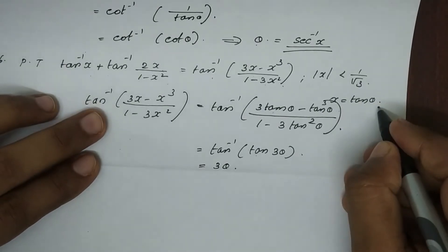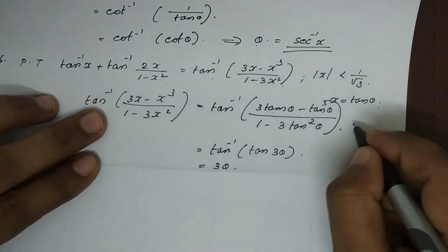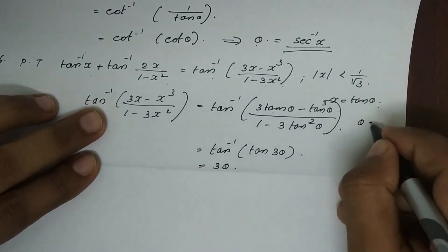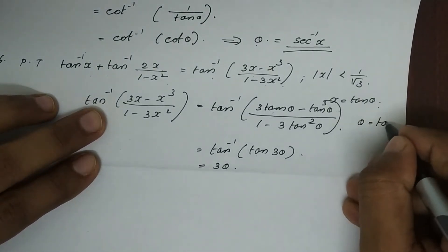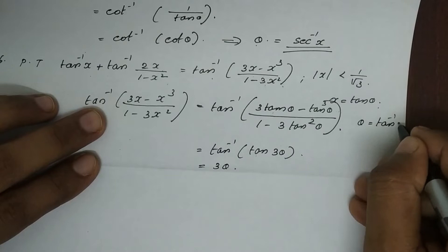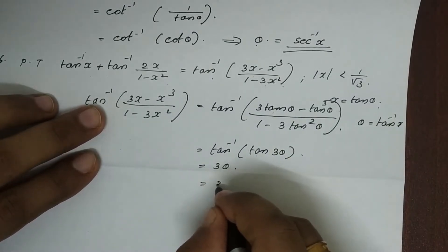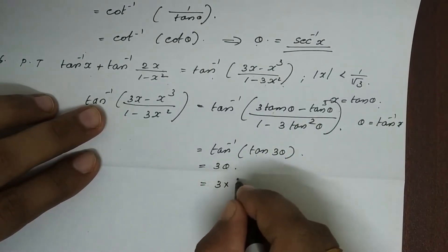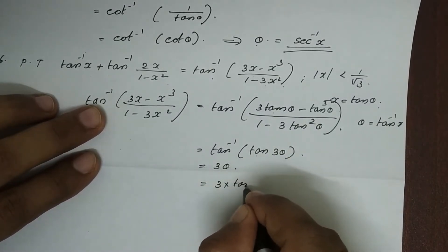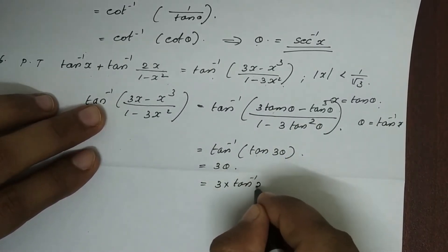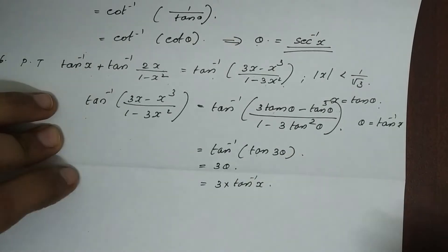Let x equal tan theta. So theta is equal to tan inverse x. Therefore the RHS becomes 3 into tan inverse x.